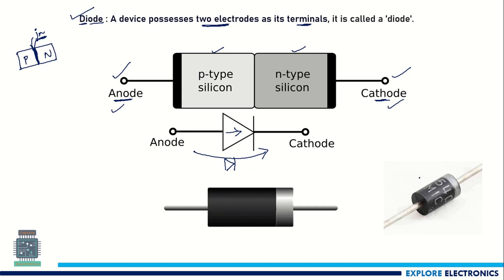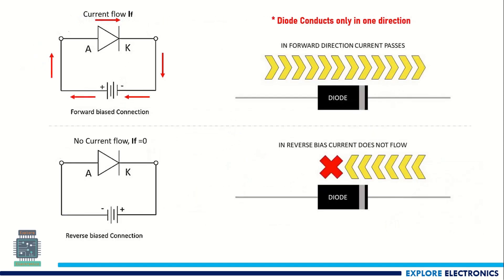Practically, if you see diodes, one end will be a silver region and the other end will be a black region. The black region will be the P region and the silver region will be the N region — this will be the cathode and this will be the anode. When the positive terminal of the battery is connected to the anode and negative terminal to the cathode, it becomes forward bias. When negative is connected to anode and positive to cathode, this becomes reverse bias condition.